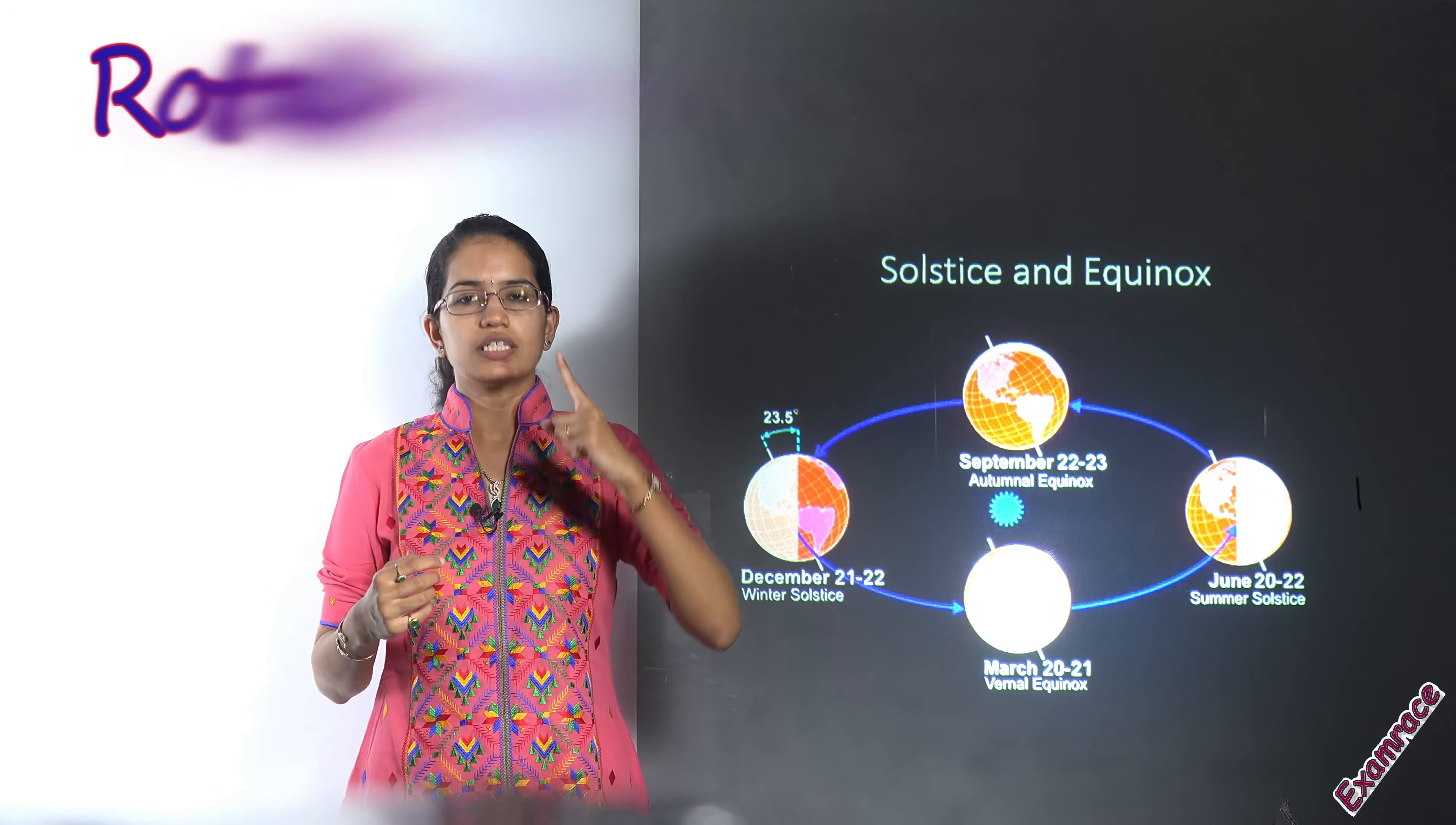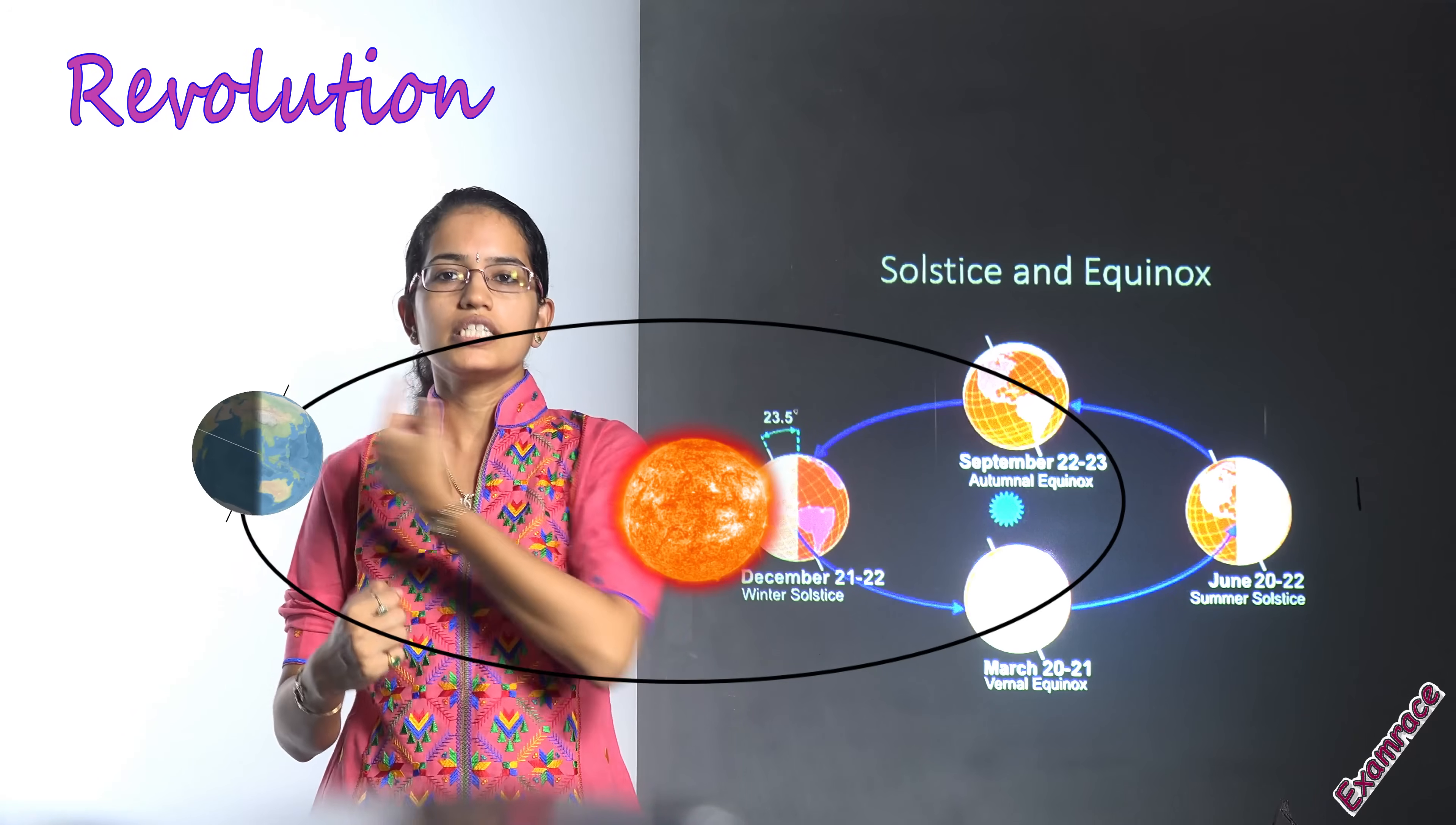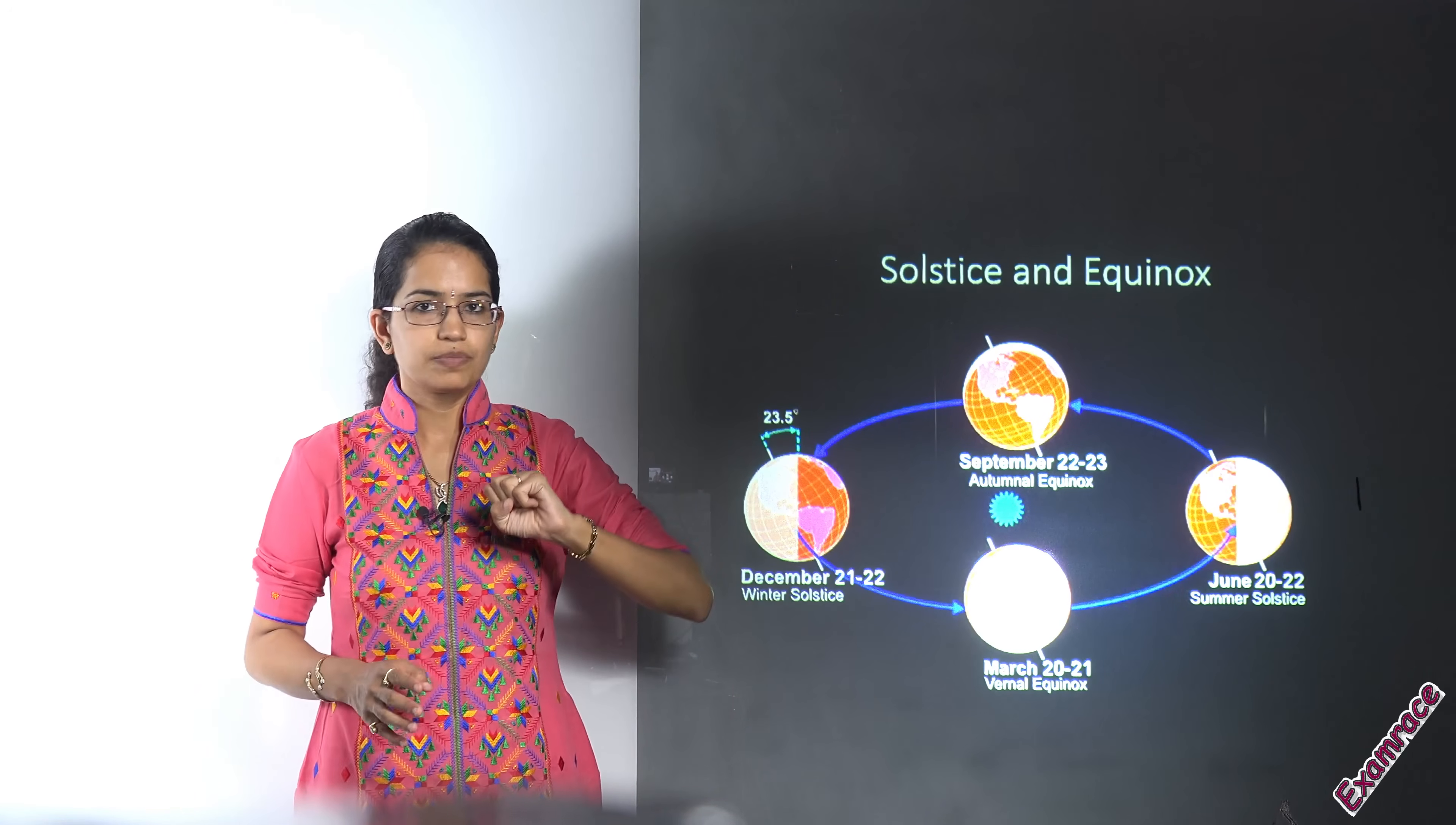When we say rotation, the Earth moves around its axis and it causes day and night. When we say revolution, it moves around the sun and this process leads to revolution. Revolution leads to changes in seasons. Now because there are changes in seasons, there would be changes in the patterns of the sunlight that's being received.